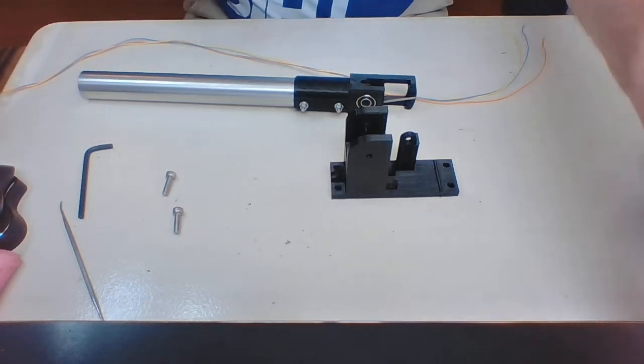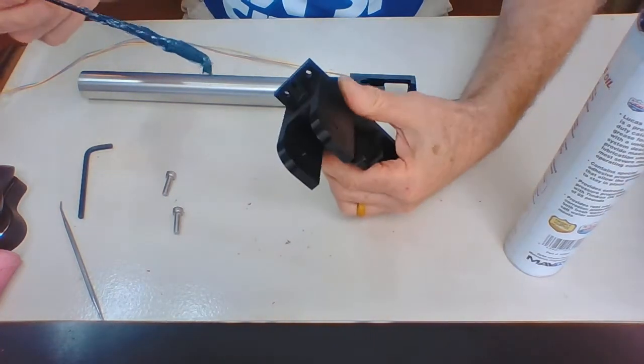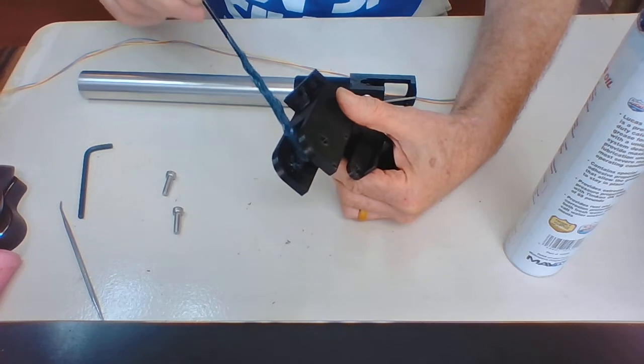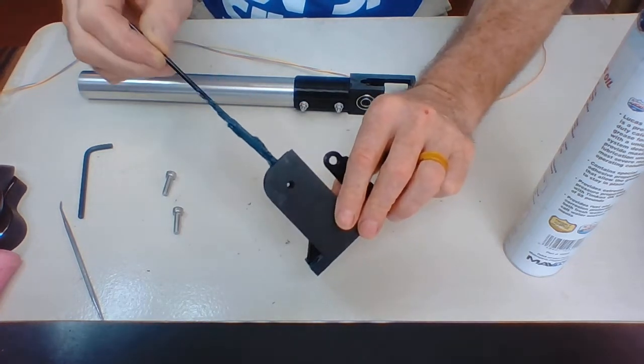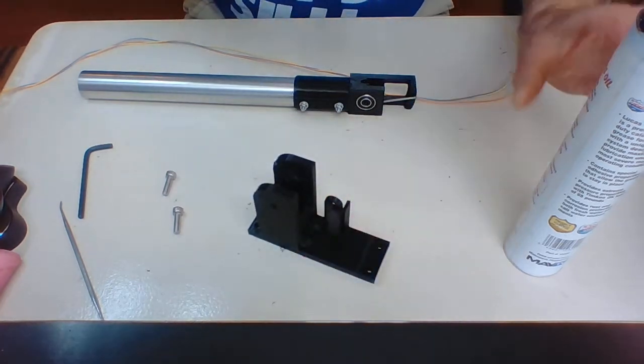Okay, so we're going to begin this assembly with a little bit of grease, and we're going to grease these lands that are right here just a little bit. It doesn't take a bunch, but on both sides there we're going to get a little grease where the pivot's going to rest.